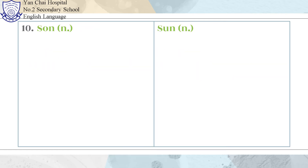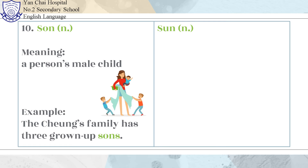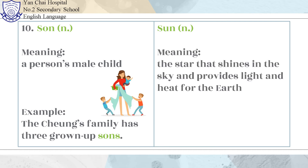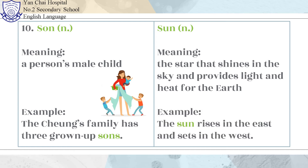Number 10: Son and Sun. Son means a person's male child. Example: The trans family has three grown-up sons. Sun means the star that shines in the sky and provides light and heat for the earth. Example: The sun rises in the east and sets in the west.